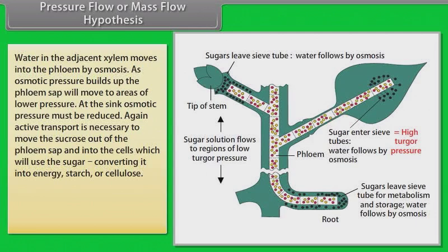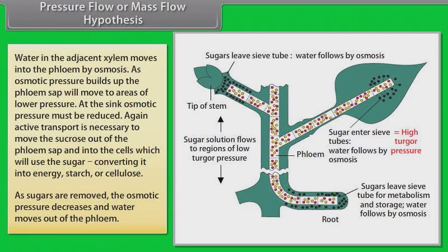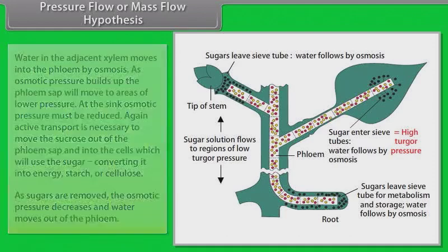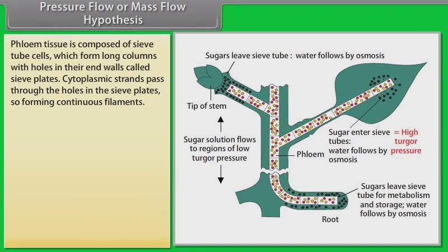At the sink, osmotic pressure must be reduced. Again, active transport is necessary to move the sucrose out of the phloem sap and into the cells, which will use the sugar, converting it into energy, starch, or cellulose. As sugars are removed, the osmotic pressure decreases and water moves out of the phloem. Phloem tissue is composed of sieve tube cells, which form long columns with holes in their end walls called sieve plates.